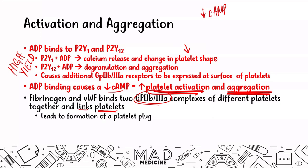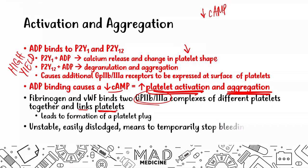The platelet plug formed in primary hemostasis is very unstable — it easily dislodges and is only a means to temporarily stop bleeding. It is not a long-term solution. What it does, however, is initiate secondary hemostasis, which is the most important part. Primary hemostasis is only there to prevent bleeding for a short amount of time, enough for secondary hemostasis to occur.